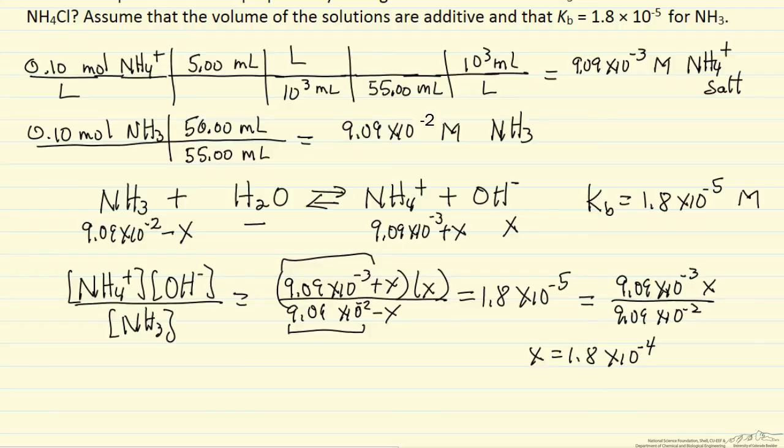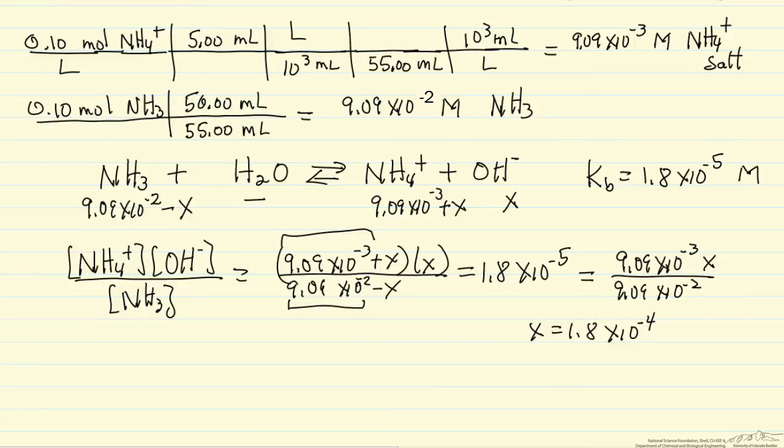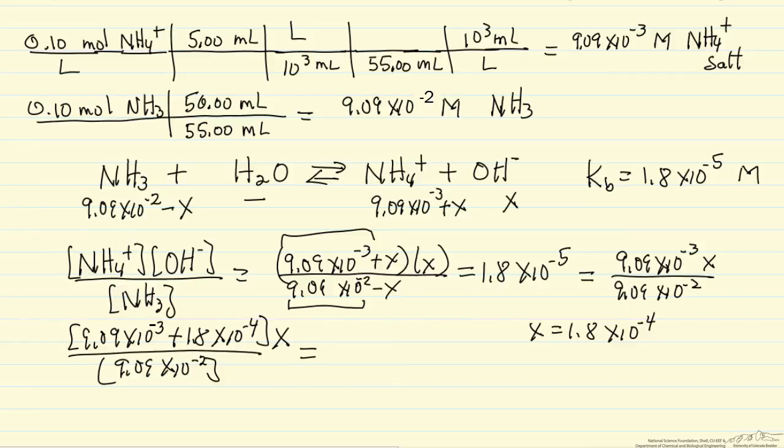So what we could do is get a better value by taking 9.09 times 10 to the minus 3, let's add the value we calculated, and then calculate a new value. We're still going to ignore it in the denominator, it's a pretty good approximation, times x, again 1.8 times 10 to the minus 5. We do this calculation, we get a slightly different answer, better approximation, and we'll go with that. So this is the OH concentration in molar units.